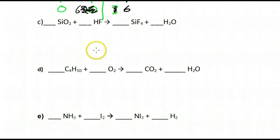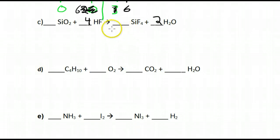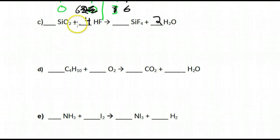Now let's try balancing by just looking at them without the chart. We have one silicon on each side — already balanced. Two oxygens on this side and only one on the other, so put a two in. Now our oxygens are balanced. Look at hydrogen: one on this side and four on the other, so put a four here. Then check F: four F's on each side — things are balanced. Always double check: one silicon each side, two oxygens each, four hydrogens each, four fluorines each.